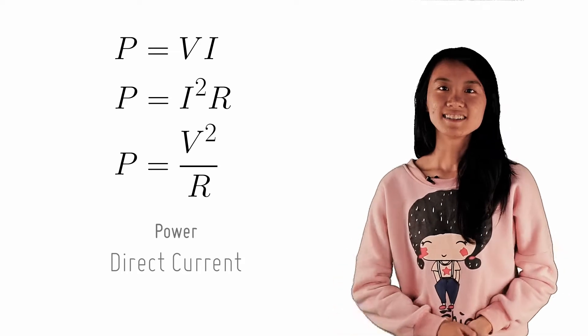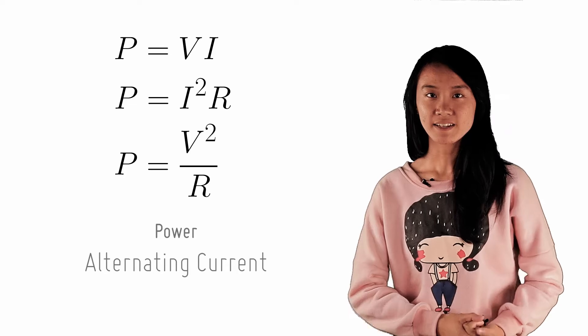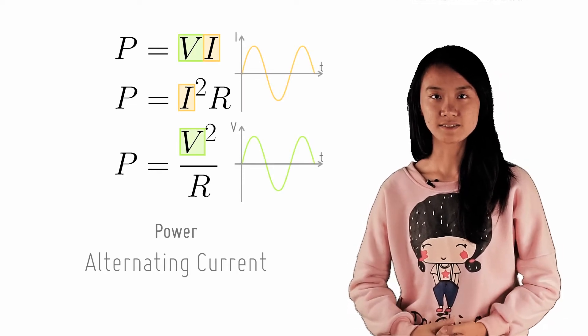Well, good news! This formula still applies for alternating currents. However, since the magnitude of an alternating current and its voltage changes, the power output of an AC is not a constant.